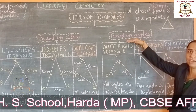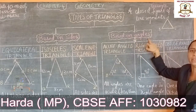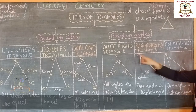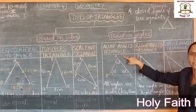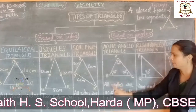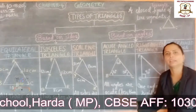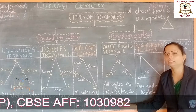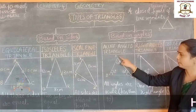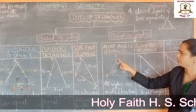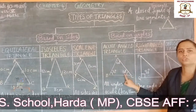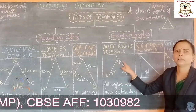Now we classify triangles on the basis of angles. On the basis of angles, there are three types of triangles. First is acute angle triangle. A triangle is called an acute angle triangle if all its angles are acute. An acute angle is less than 90 degrees. See here, in triangle ABC: angle A is 60°, angle B is 70°, angle C is 50°. All angles are acute.